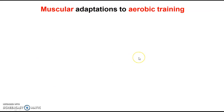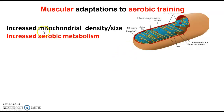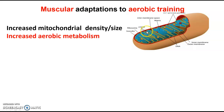Muscular adaptations to aerobic training. Within our muscle cells, certain things change as a result of HIIT or continuous training. The first is we have an increase in mitochondrial density or size. From the aerobic energy system, we used the mitochondria matrix for the Krebs cycle, synthesising 2 ATP, and the mitochondria cristae — the folds of the mitochondria — where NAD and FAD carried hydrogen to allow us to resynthesize 34 ATP.